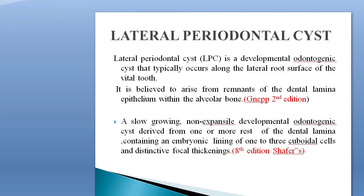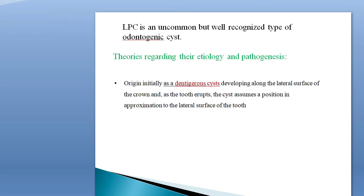Today I am talking about the topic lateral periodontal cyst. Lateral periodontal cyst is a developmental odontogenic cyst that typically occurs along the lateral root surface of a vital tooth. It is believed to arise from remnants of the dental lamina epithelium within the alveolar bone. It is a slow-growing, non-expansile developmental odontogenic cyst derived from one or more rests of the dental lamina, containing an embryonic lining of one to three cuboidal cells and distinctive focal thickening.